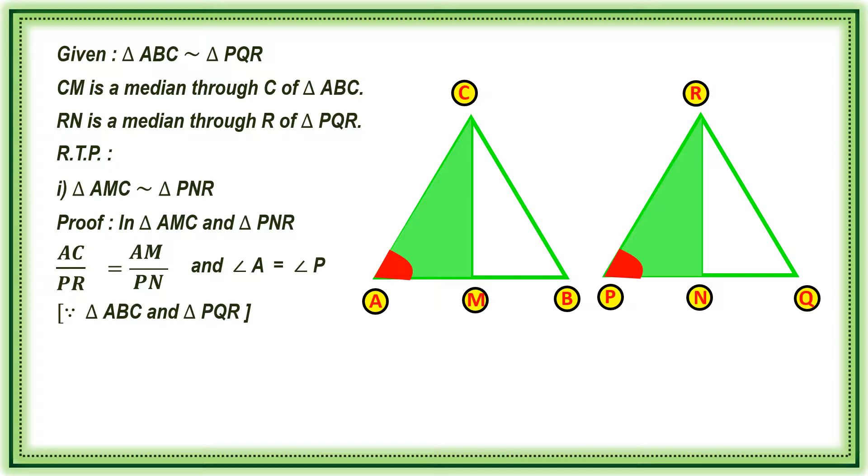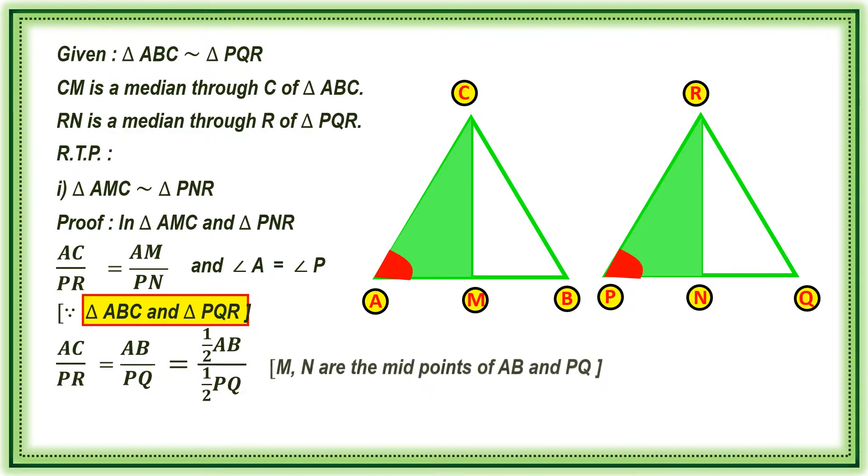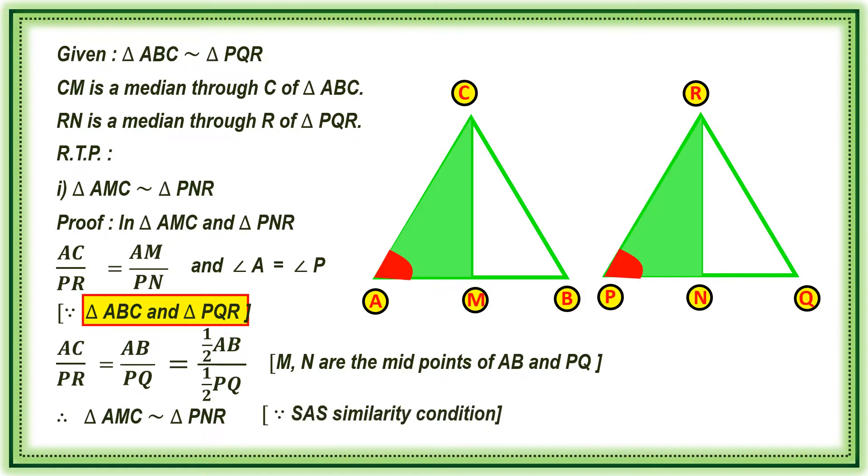Since it got from triangle ABC and triangle PQR, AC by PR is equal to AB by PQ. That is nothing but half of AB. If you take half of AB, then it will become AM. In the similar way, half of PQ is equal to PN. M and N are the midpoints of AB and PQ. Therefore, triangle AMC similar to triangle PNR by side angle side similarity condition.